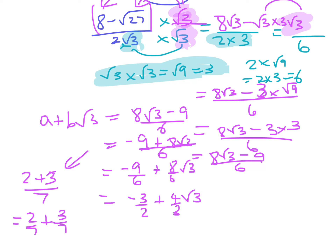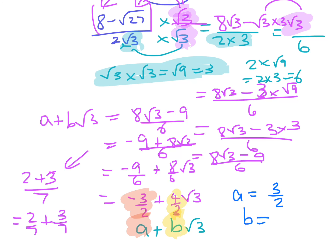Comparing to a + b√3: the number in front of root three is 4/3, so b = 4/3, and the number on its own is −3/2, so a = −3/2. That is your solution: a = −3/2 and b = 4/3.